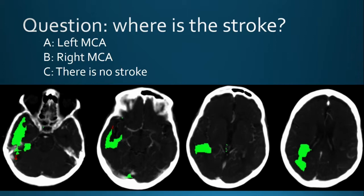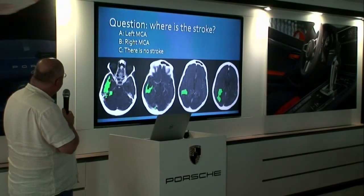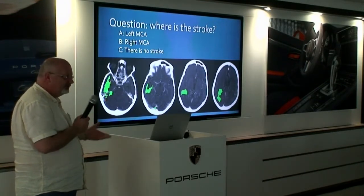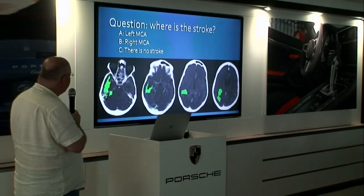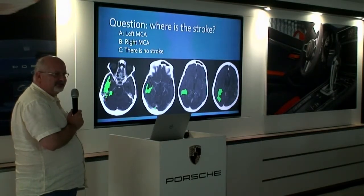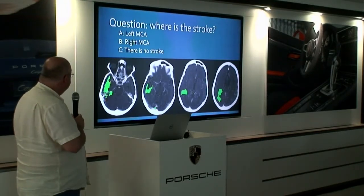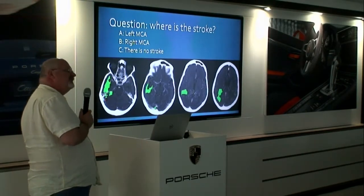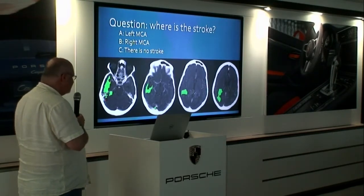I'll show you two cases — very quickly. Where is the stroke? This is a conventional CT scan. Is it a left MCA, right MCA, or no stroke? Who says left MCA? Who says right MCA? Right-sided weakness and the patient has a right gaze. Actually, everyone says it's a right MCA — let me give you a little more hint.